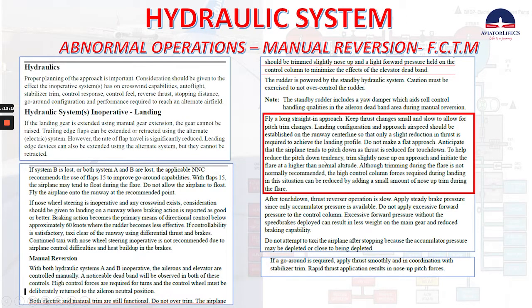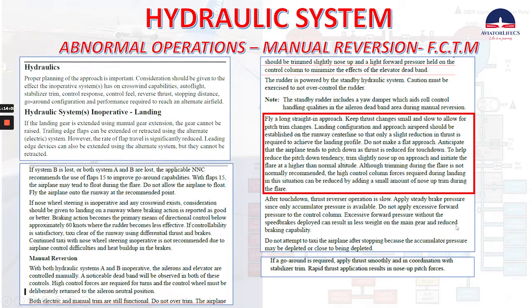Do not make a flat approach. Anticipate that the airplane tends to pitch down as thrust is reduced for touchdown. To help reduce the pitch-down tendency, trim slightly nose up on approach and initiate the flare at a higher than normal altitude. Although trimming during the flare is not normally recommended, the high control column forces required in this situation can be reduced by adding a small amount of nose up trim during the flare. After touchdown, thrust reverser operation is slow. Apply steady brake pressure since only accumulator pressure is available. Do not apply excessive forward pressure to the control column.